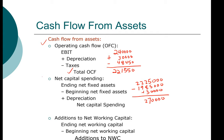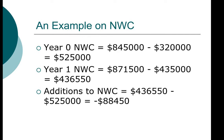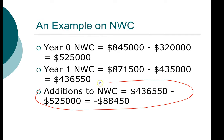The last part is to compute additions to net working capital. We already did this work earlier, so we can copy that. Make sure you understand how we arrive at negative $88,450 — review your work or the slides if needed.